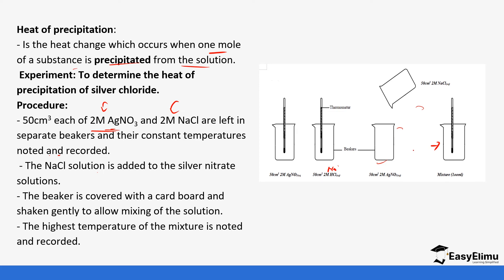The highest temperature of the mixture is noted and recorded. I want you to note the volumes we are using: 50 cm³ of the nitrate and 50 cm³ of the chloride, so the total volume is going to be 100 cm³.